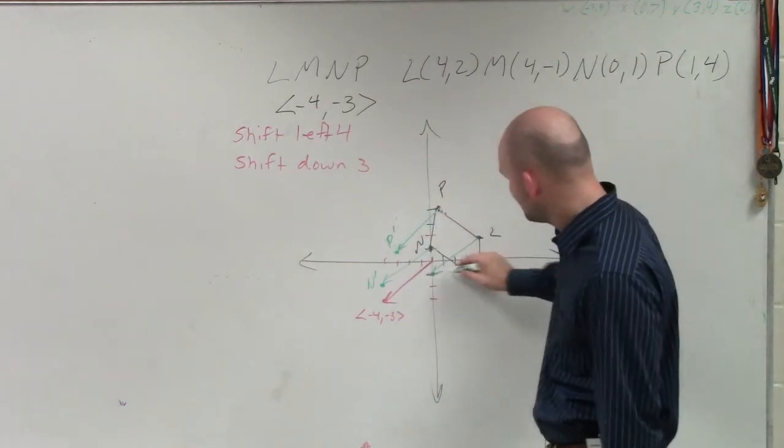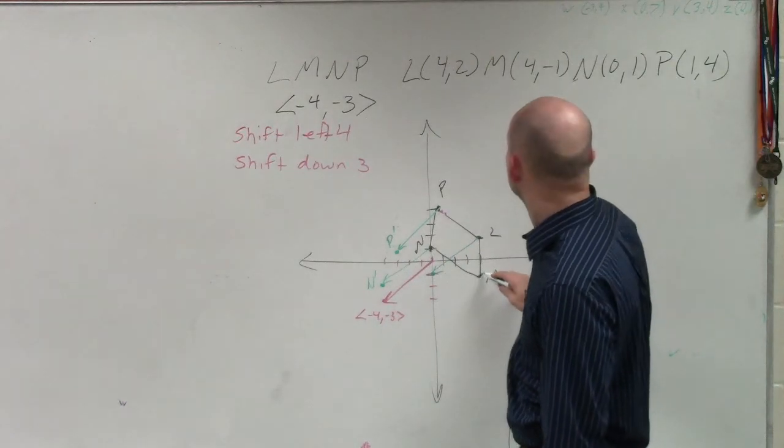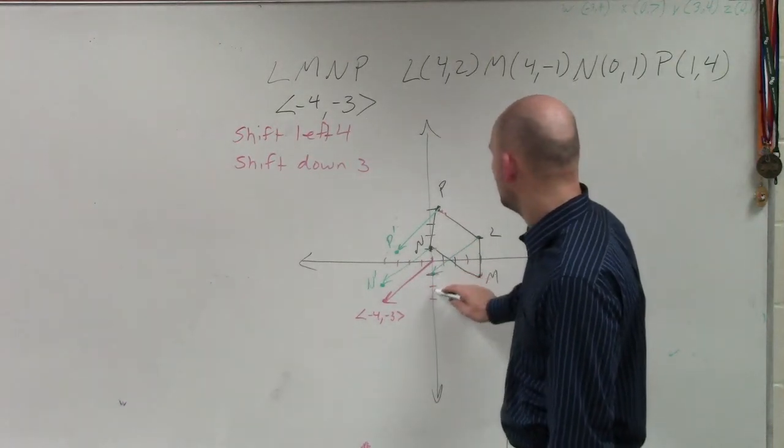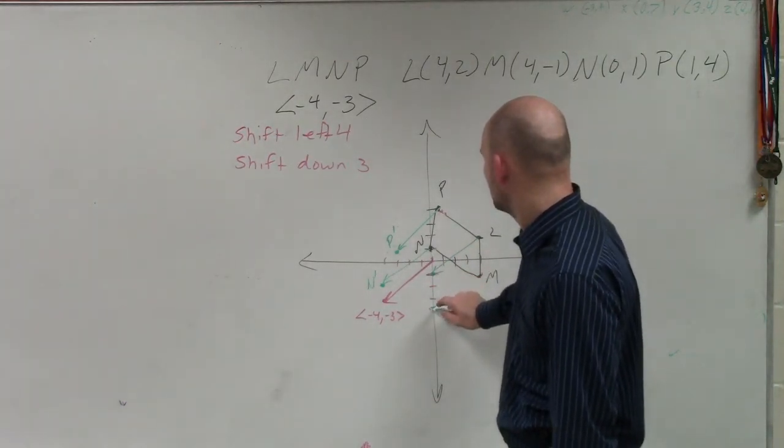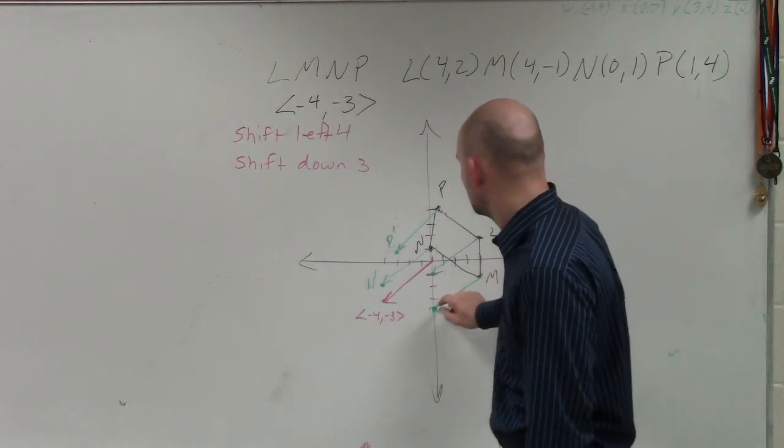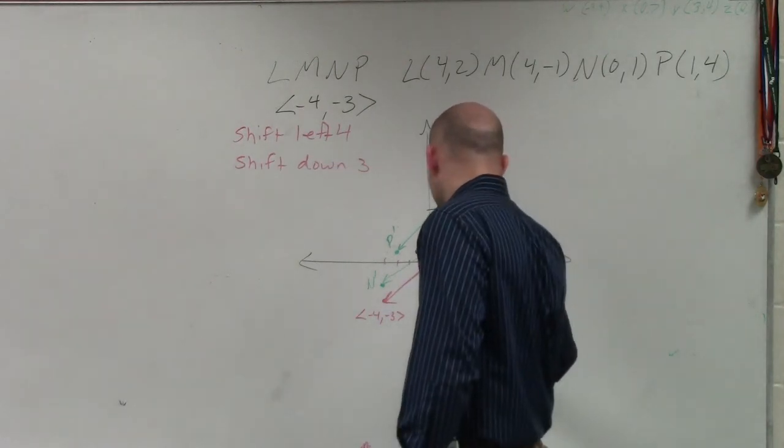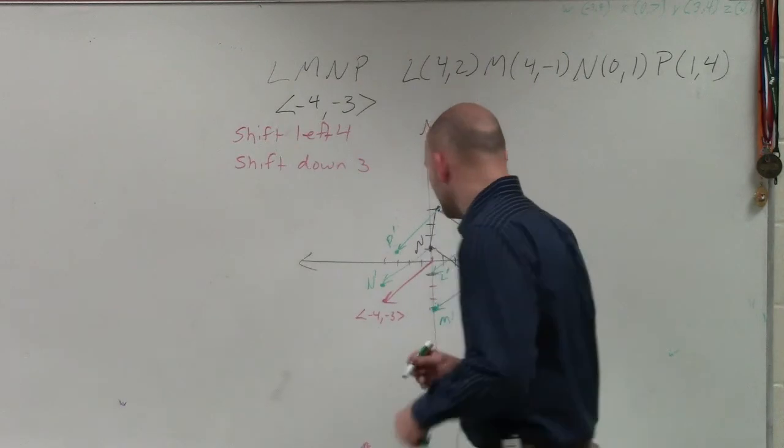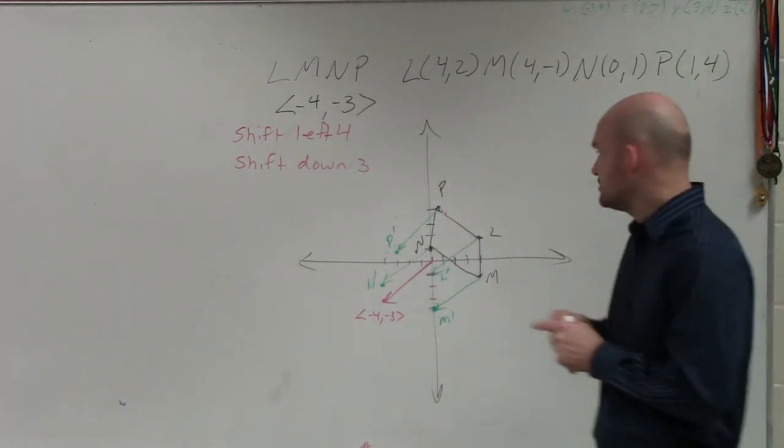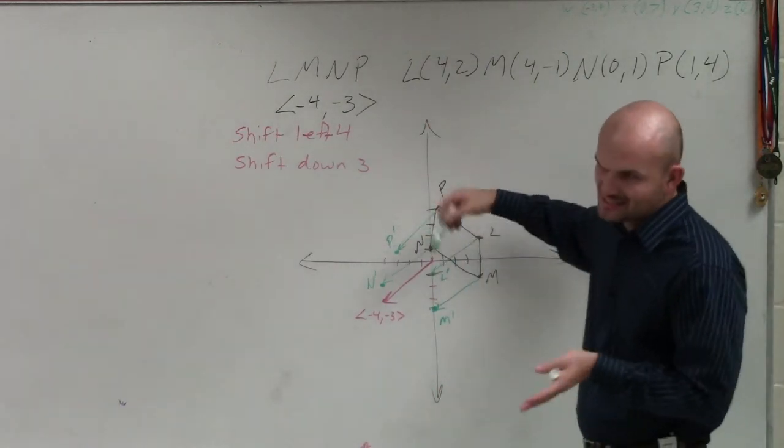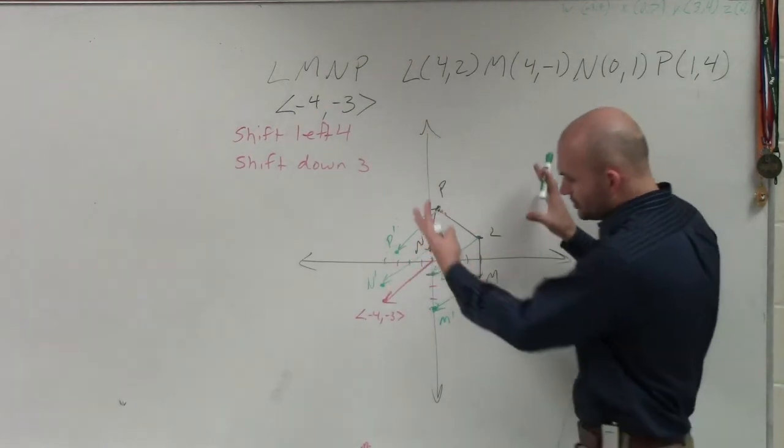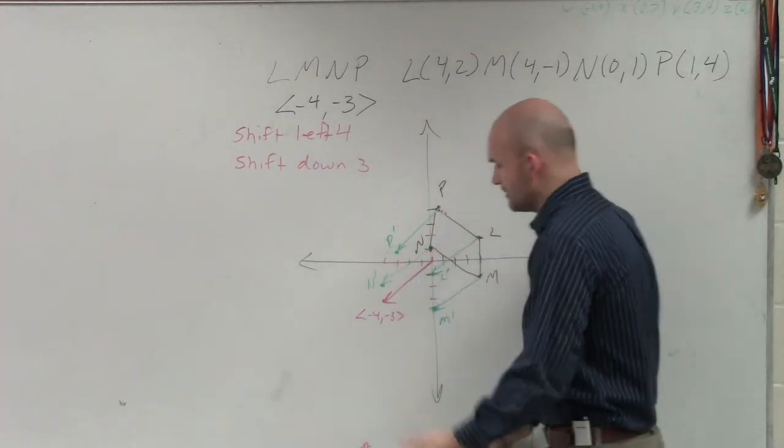And then M, left 4, down 3... 1, 2, 3. So that is now M prime. This is now L prime. So you guys see how I just used that transformational vector? I know my spacing is not perfectly correct, but I took the vector and I applied it to every single one of my points.